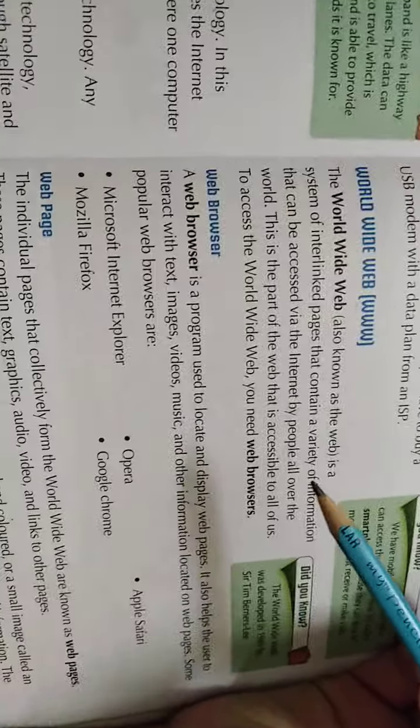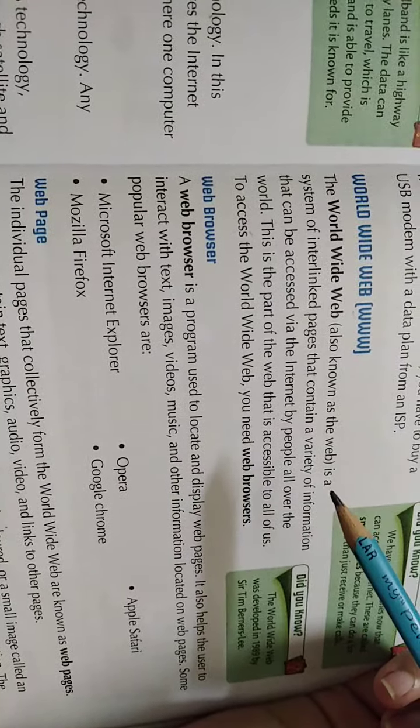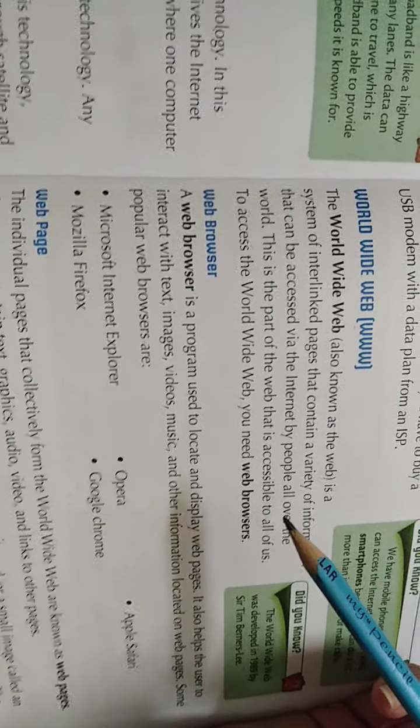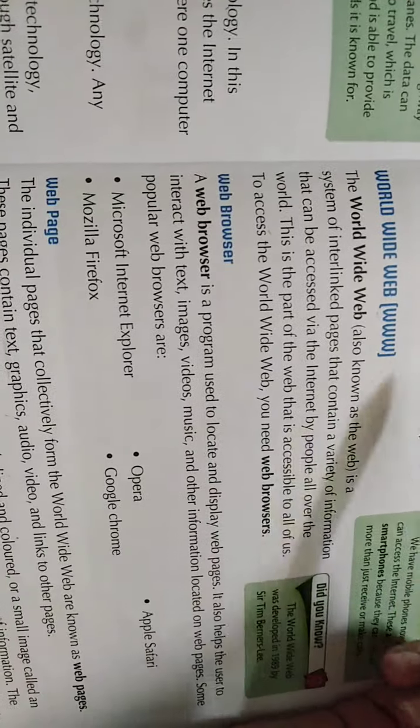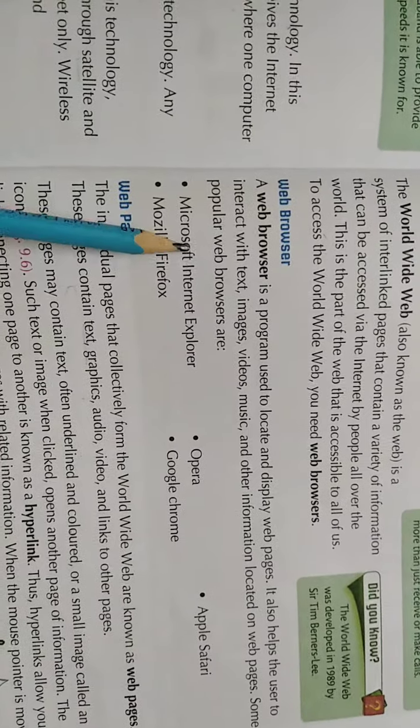Then comes World Wide Web. World Wide Web means that you can access any type of thing, any type of website through your internet browser. Means all the websites are connected with each other. What is the web browser? A web browser is a program which gives you the facility to search for websites.